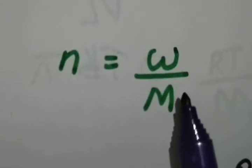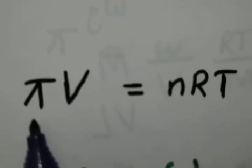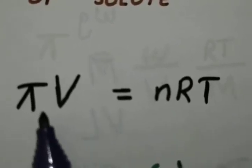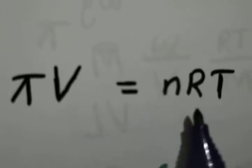Then the number of moles of the solute n is equal to W by M. If π is the osmotic pressure of the solution at a temperature T Kelvin, then according to Van't Hoff equation, πV is equal to nRT.